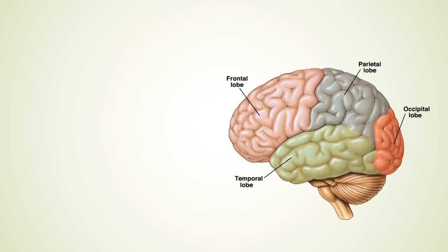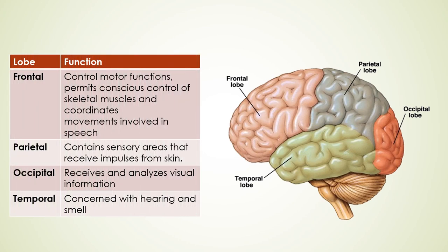The cerebral cortex has a large surface area and is divided into four lobes, each controlling different functions. You can remember them with the abbreviation FPTO: frontal, parietal, temporal, and occipital. The frontal lobe controls motor functions, permits conscious control of skeletal muscles, and coordinates movements involved in speech. The parietal lobe contains sensory areas that receive impulses from the skin. The occipital region receives and analyzes visual information, while the temporal lobe is concerned with hearing and smell.